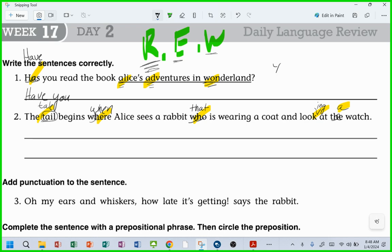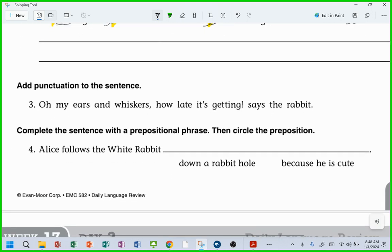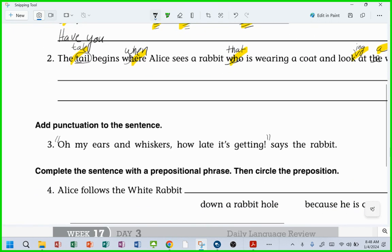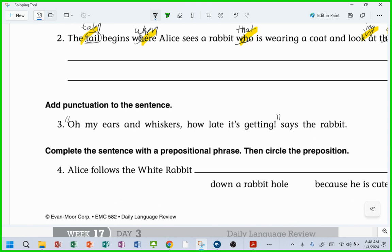All right, add punctuation to the sentence. Oh my ears and whiskers, how late it's getting, says the rabbit. Right, I think we're good. That's all we needed there.